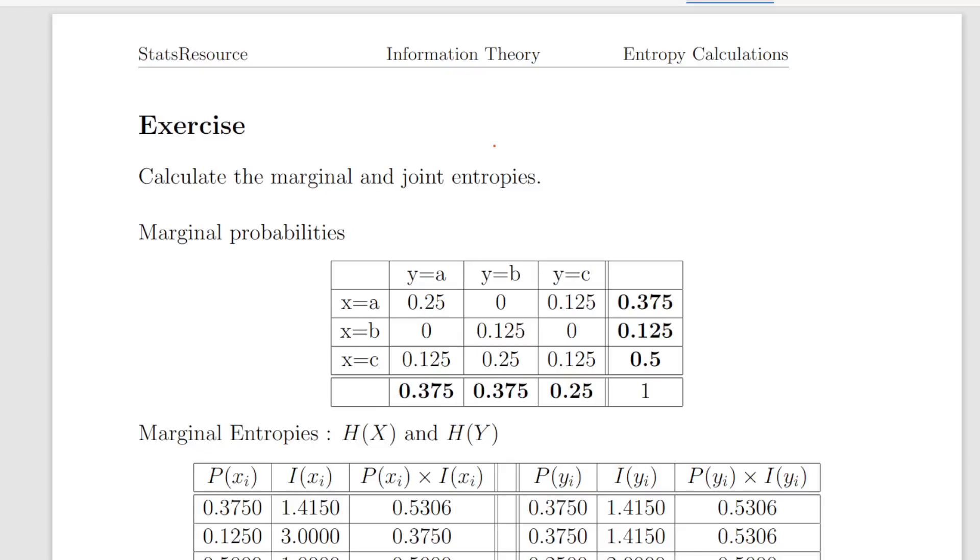Okay, in this presentation we are going to look at some entropy calculations. So what we have here is two sources. We have Y which comprises three symbols A, B, C and X which also comprises three symbols A, B, C. So the job is calculate the marginal and joint entropies of X and Y.